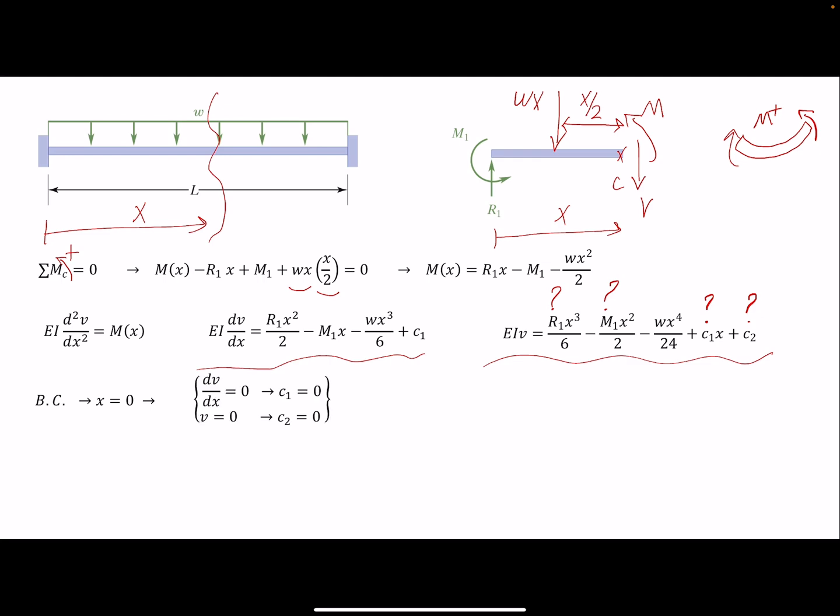We know at x equals zero, the slope and the deflection would be zero, so both C1 and C2 would be zero. And also at x equals L, the other end of the beam, the same boundary condition applies. The slope and deflection would be zero, so we can find R1 and M1.